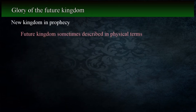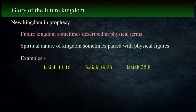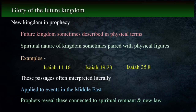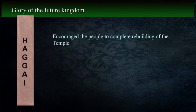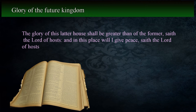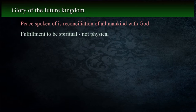The kingdom in prophecy is described in terms incorporating physical images at times, and the idea of the spiritual kingdom is sometimes paired with these physical images. Some of these — such as Isaiah 11:16, 19:23, and 35:8, which refer to a highway of holiness that would be in place for God's people — are often interpreted literally and applied to events in the Middle East today. If we study the prophets, we'll see that these images and others are coupled with the idea of a spiritual remnant that would be gathered together to serve the Lord and the revelation of a new law that will guide them. As work on the temple in Jerusalem progressed, Haggai uses this temple as a figure contrasted with the temple of Solomon to show that something greater was coming: 'The glory of this latter house shall be greater than of the former, saith the Lord of hosts. And in this place will I give peace, saith the Lord of hosts' in Haggai 2:9. The peace spoken of is the reconciliation of all mankind with God, indicating that the fulfillment is to be spiritual, not physical.